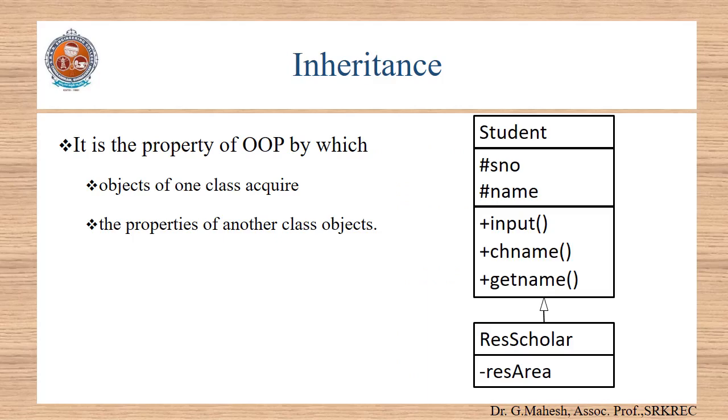Let us see what is meant by inheritance. It is the property of OOP by which objects of one class acquire the properties of another class objects. If objects belonging to one class wishes to add attributes and methods of another class objects, then they could get these properties from another class by this inheritance. The class that acquires the properties is derived class. The class from which the properties are acquired is base class. So, base class members could be used by derived class.